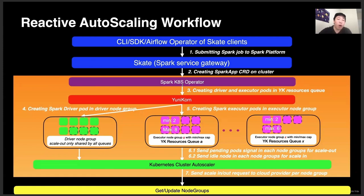This is the workflow of how our cluster size changes based on Spark workloads per node group. When users submit their job to our gateway, the gateway service creates the CRD on the corresponding cluster. It creates driver pods on the driver node group to ensure the job can always be scheduled. Then executor pods are created by the Spark operator in the pre-assigned node group scheduled by Yunikorn. Once the Kubernetes cluster autoscaler finds a pending pod in any node group, it talks to the cloud provider to scale out the appropriate number of nodes. Vice versa, once it finds idle nodes, it terminates them to save cost.